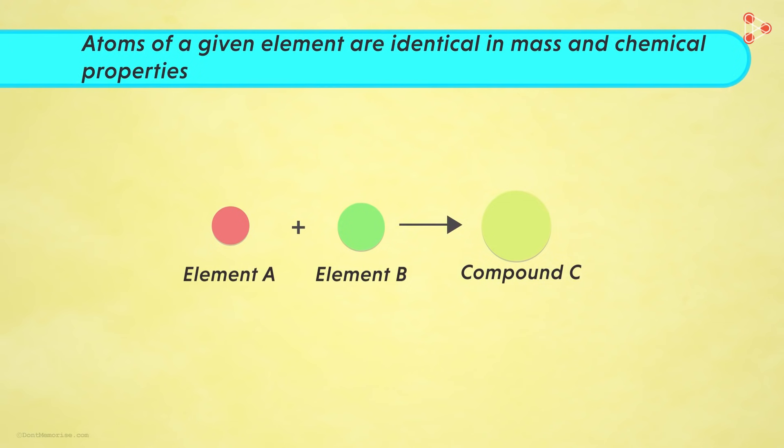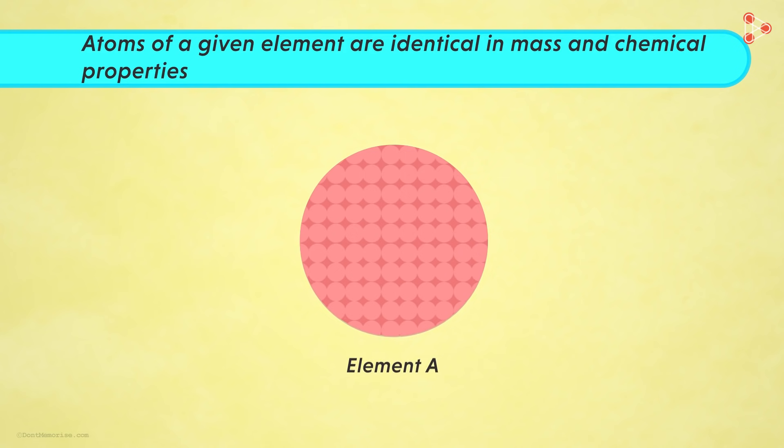Let's move on to the third one now. The third postulate states that atoms of a given element are identical in mass and chemical properties. If we zoom into the element A, we find all the atoms that make up element A are just the same. And in what sense are these same? The atoms have identical mass as well as chemical properties. In simple words, the third postulate states that all atoms of a given element are identical.